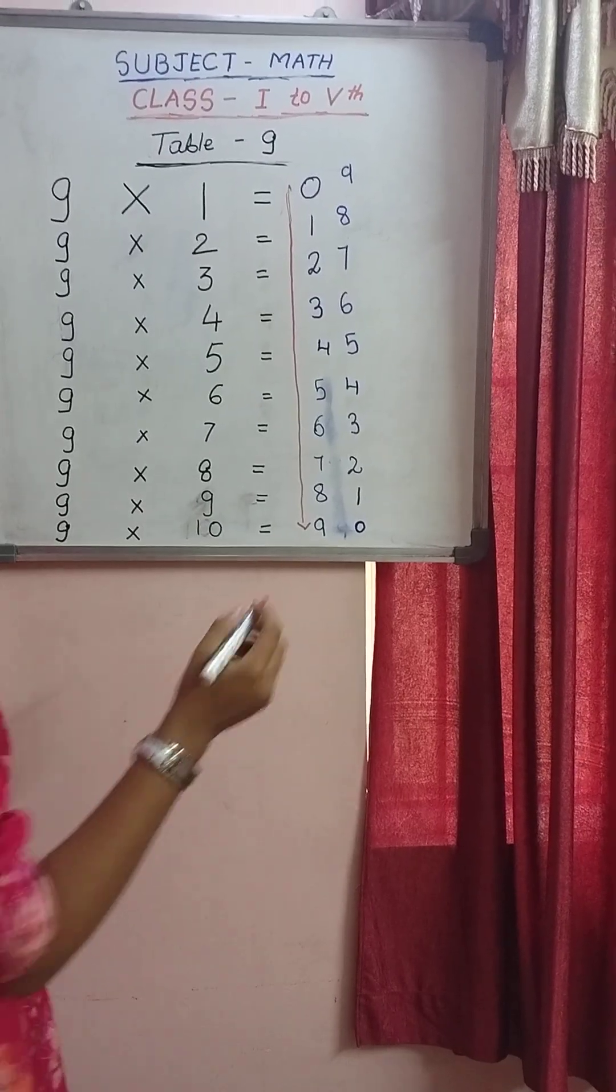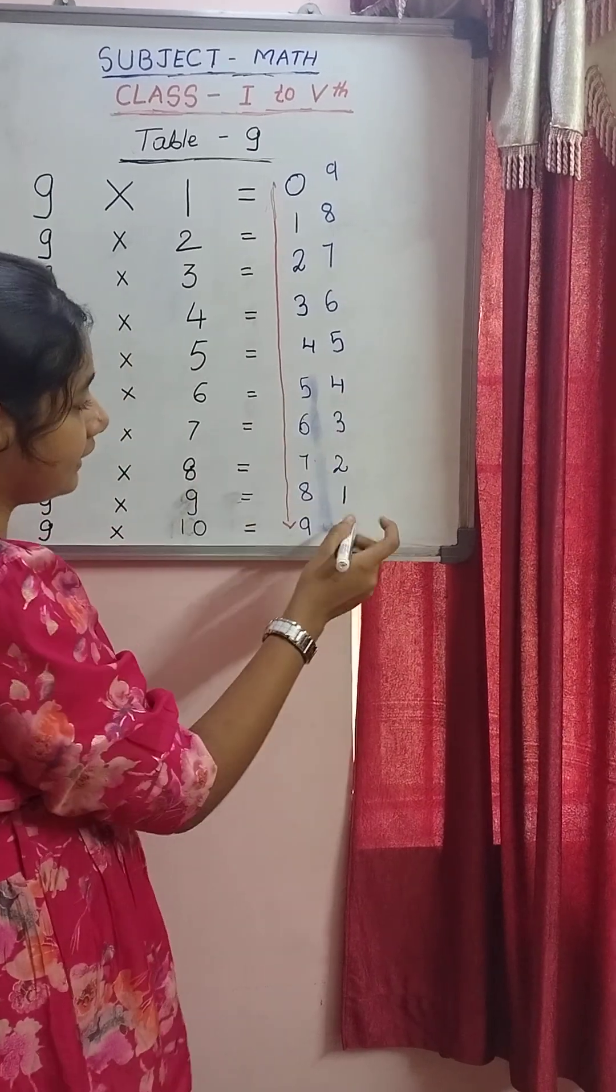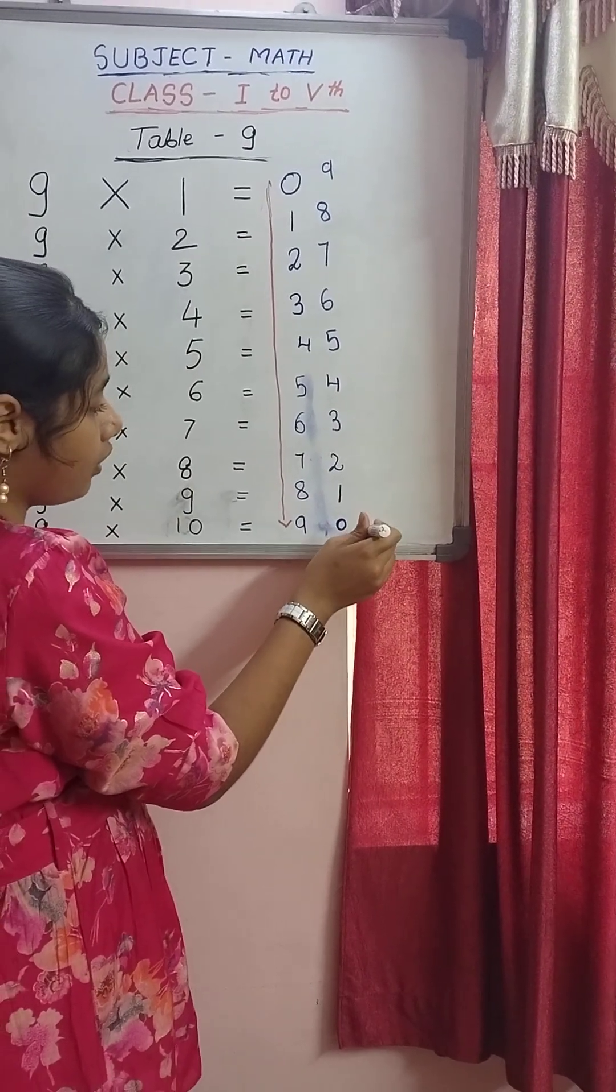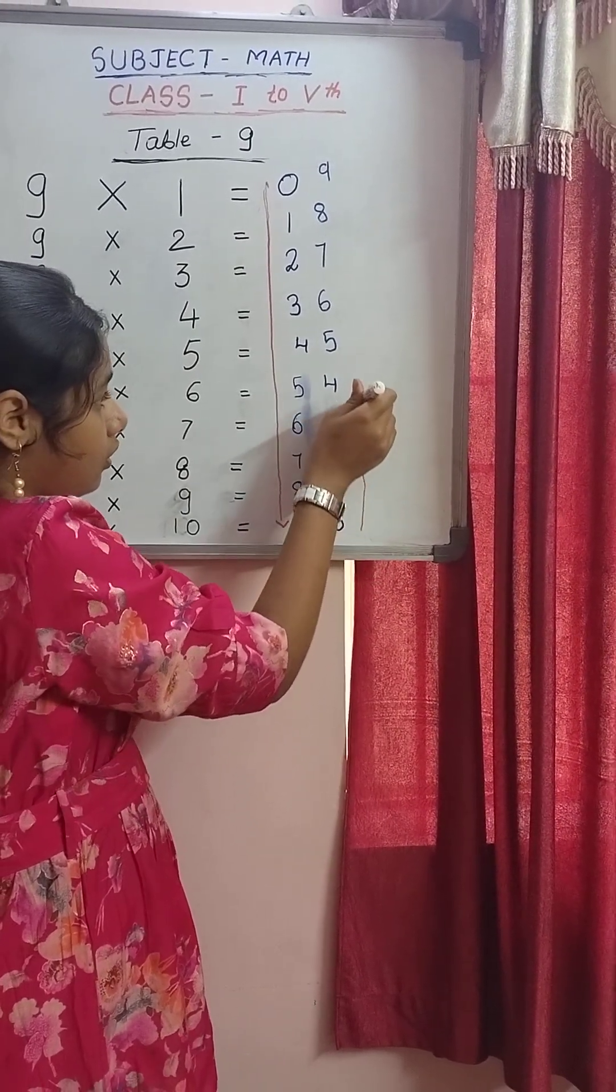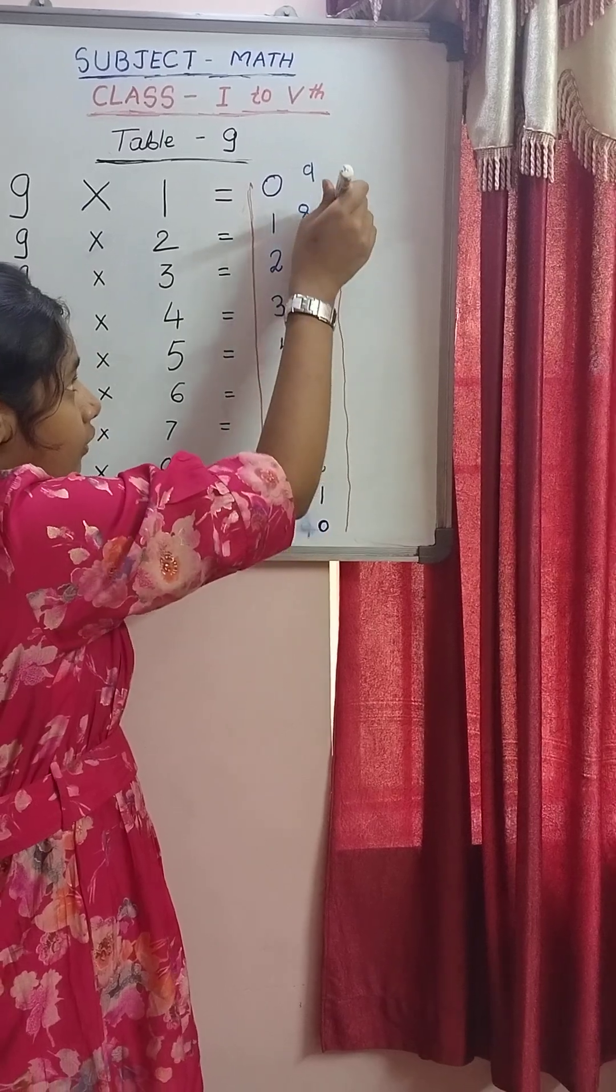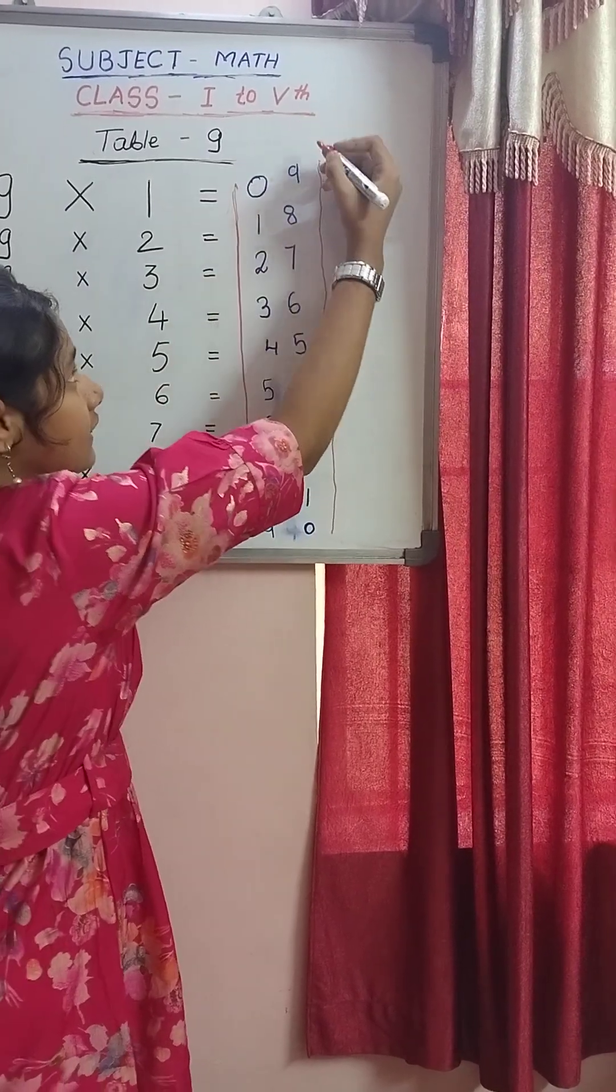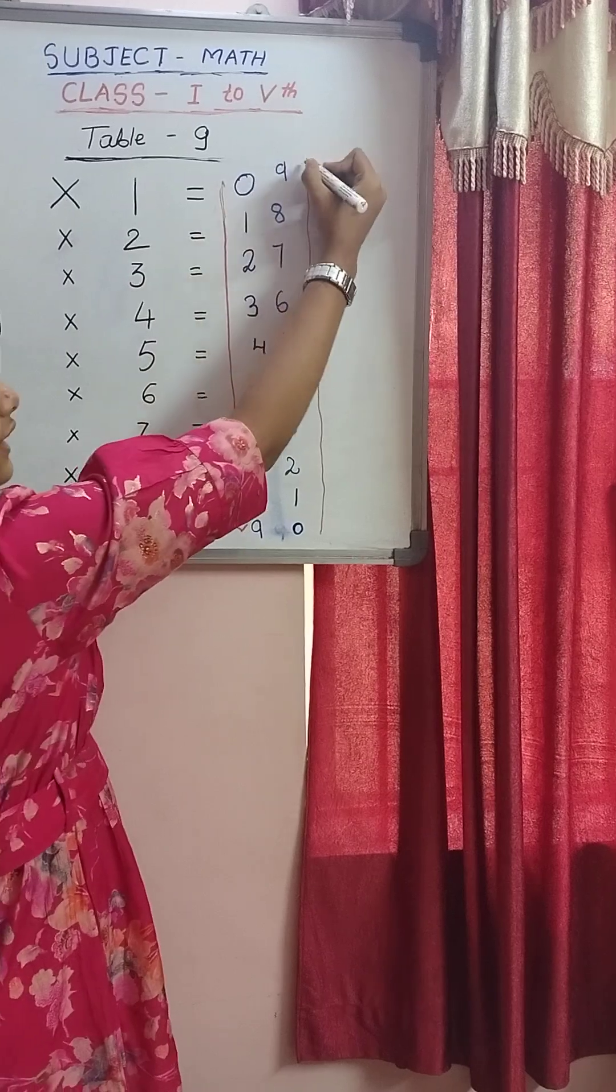So now we are going to see how it goes like this. So we are going to start it from bottom. So zero, 1, 2, 3, 4, 5, 6, 7, 8 and 9.